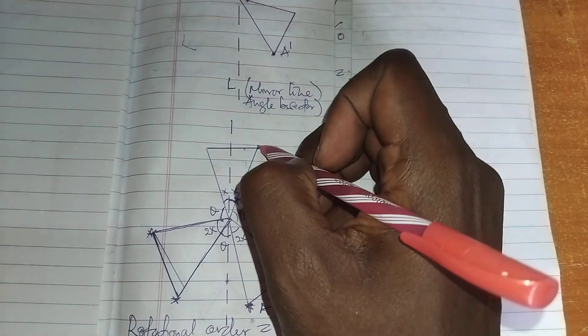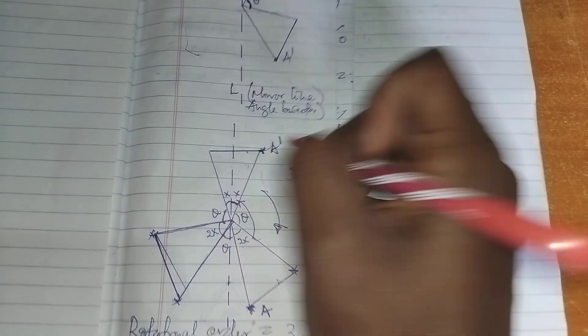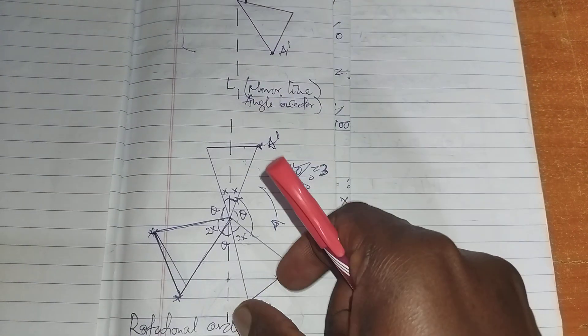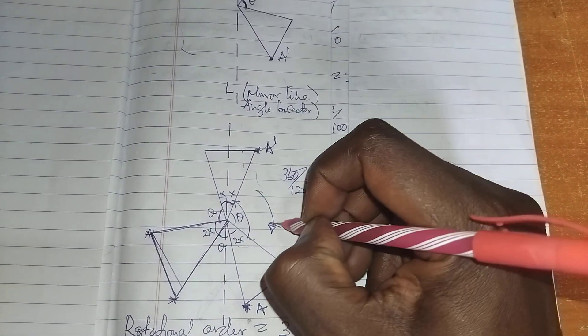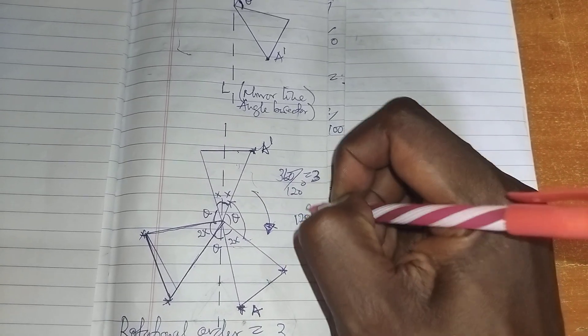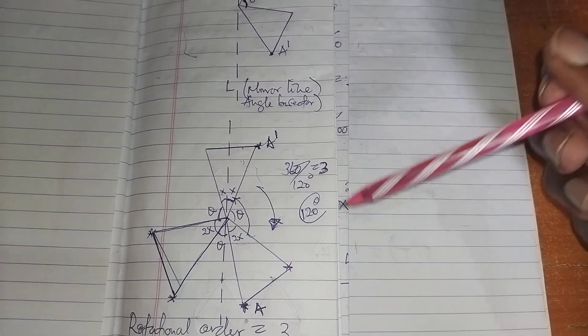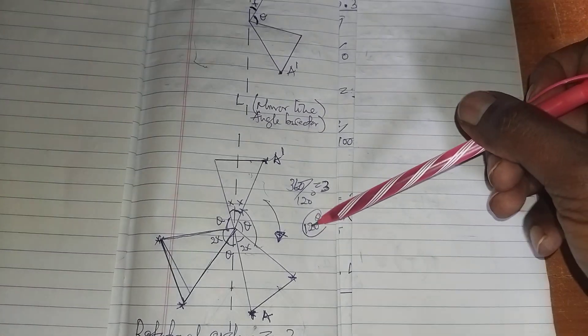If it is A and also A prime, when you rotate this object, it can fit into this object. So for this case, the angle is 120 degrees if you measure.